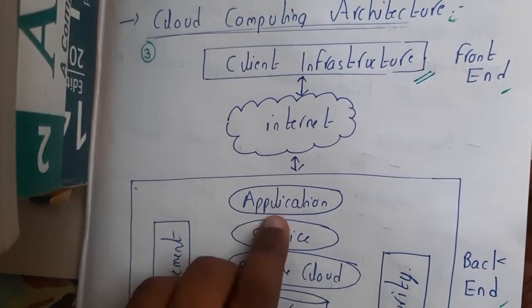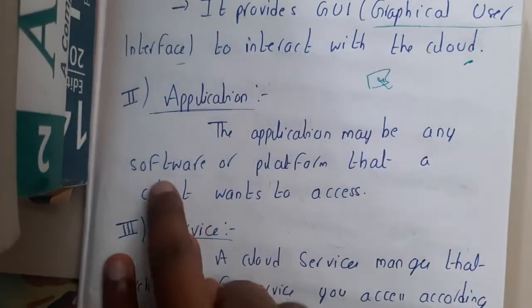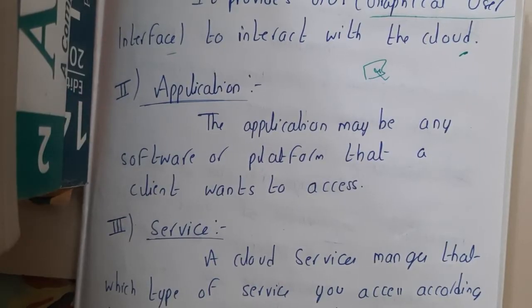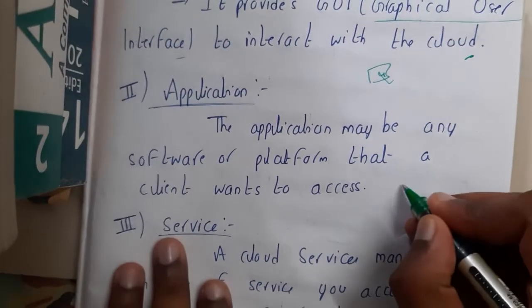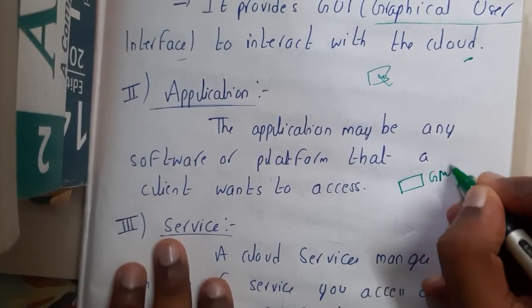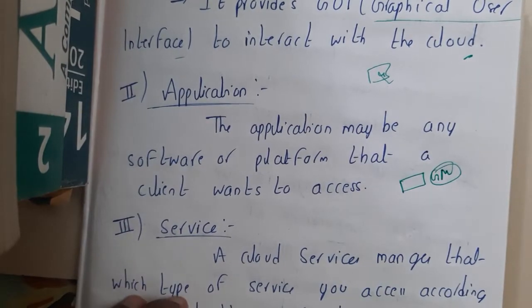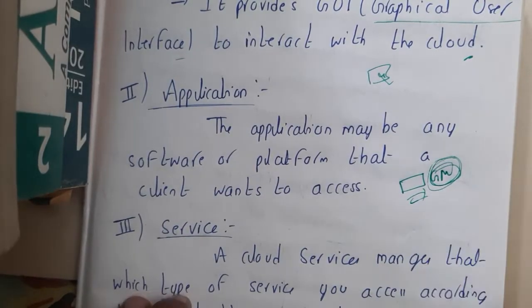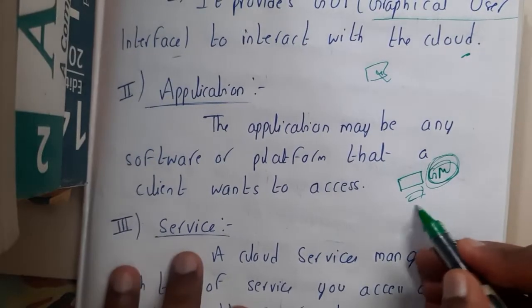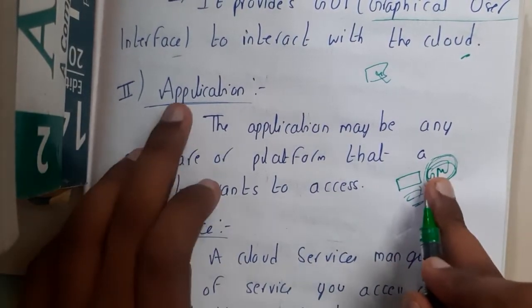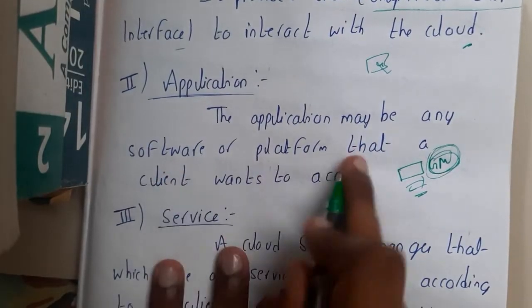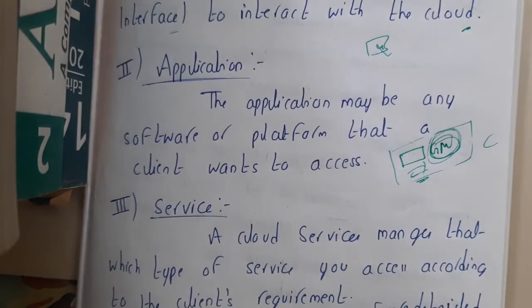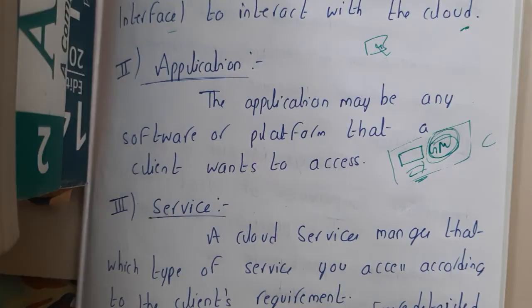The second component is the application. The application may be any software or platform that a client wants to access. For example, assume you are accessing Gmail — that is a mail service provider where you can send and receive mails. Basically, this is a type of application. If you are accessing something and these things are stored in a cloud, then this is the application you are using.